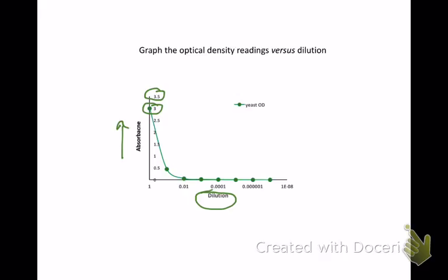If you graph those data, they would look something like this. We would put dilution on the horizontal axis, and we would plot the absorbance on the vertical axis going up to, here's our top value, 3.0.